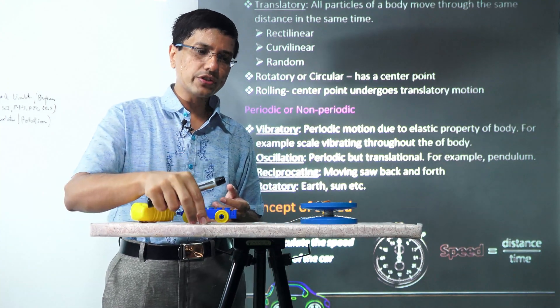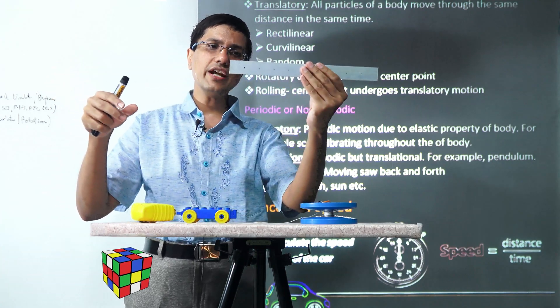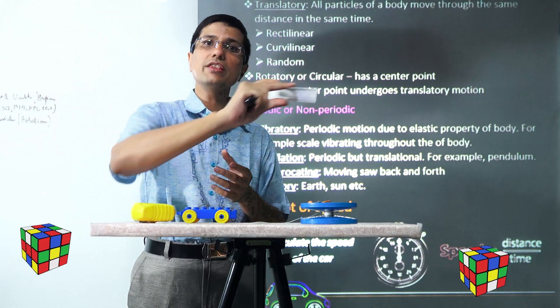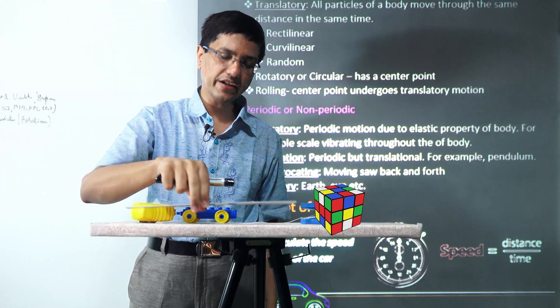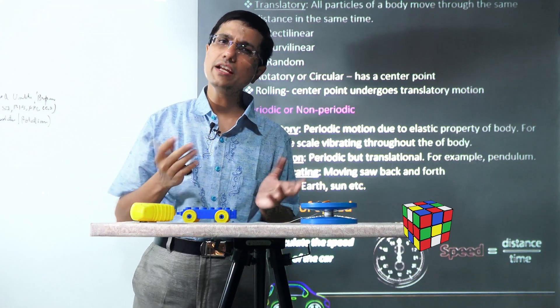The translation can be linear when things are moving straight. It can be curvilinear when things are moving round in a circular trajectory, and it can be random.